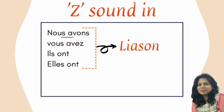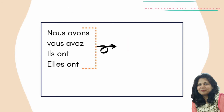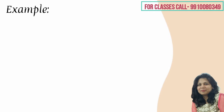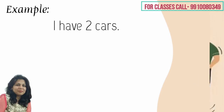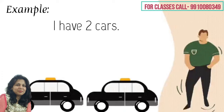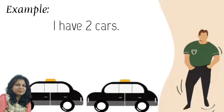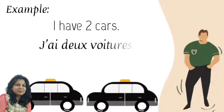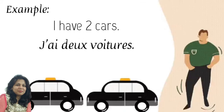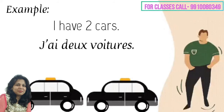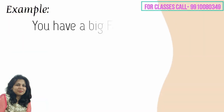Now let's try to make a few sentences using the verb avoir. For example, if I want to make the sentence 'I have two cars' — car in French is 'une voiture' — the sentence will be: j'ai deux voitures. We have already done numbers in our previous video. Let's try another one: 'you have a big family.'